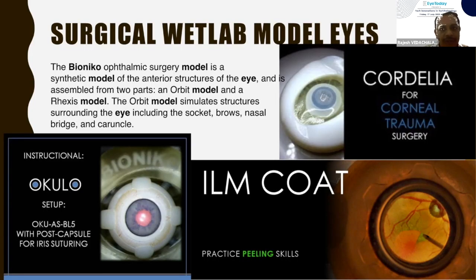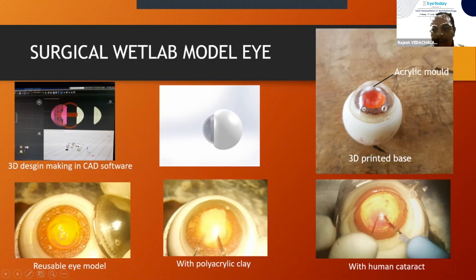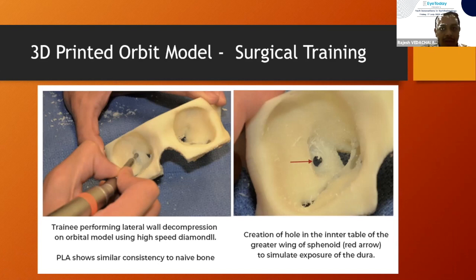They have also 3D printed surgical wet lab models like Bionico, Cordelia, and Oclo for various surgeons. This 3D printed model by Dr. Parishan had the lower part printed in ABS and the upper part as a transparent acrylic mold with two openings for the FACO probe and chopper — you can practice FACO in it and it can be reused. 3D printed orbital dissection models are used for teaching both ophthalmologists and optometrists, and are preferred over cadaveric and photographic models. They are also used in surgical training — here a lateral decompression is performed using a PLA-printed orbit that gives the same feel as bone.